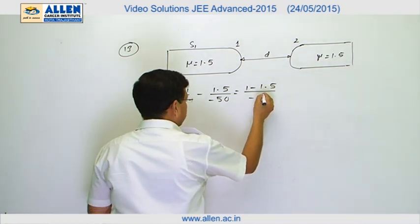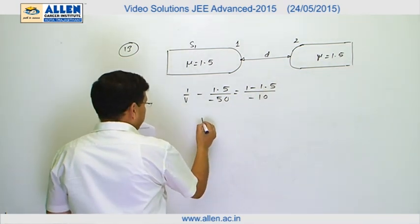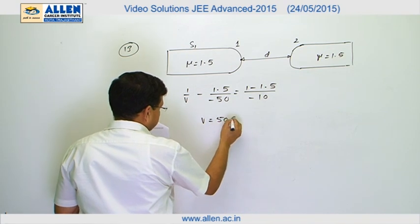So, this is minus 10. From here, we will get V to be equal to 50 centimeter.